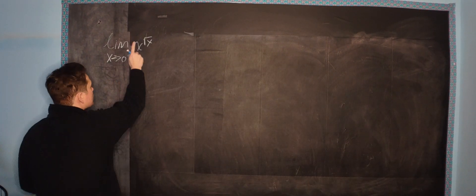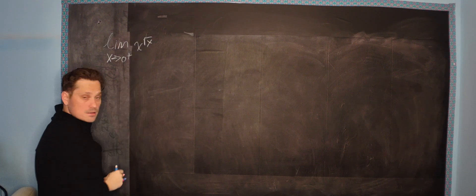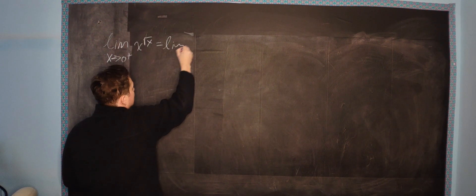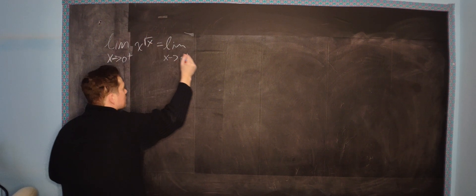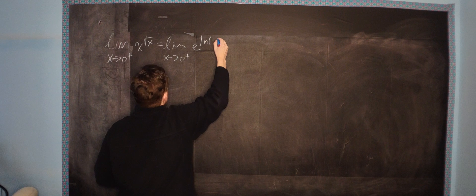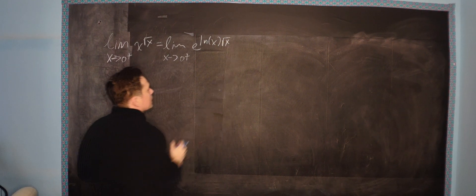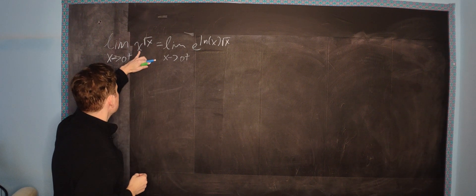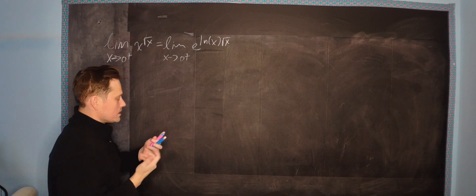So the limit as x approaches 0 from the right side of x raised to the square root of x. The first stage in the process is you can write this as the limit as x approaches 0 from the right side, written as e to the ln of x, multiplied by the root of x. This is allowed because the e and ln functions are inverses, so you can rewrite the base x as e to the ln of x — it means the same thing.